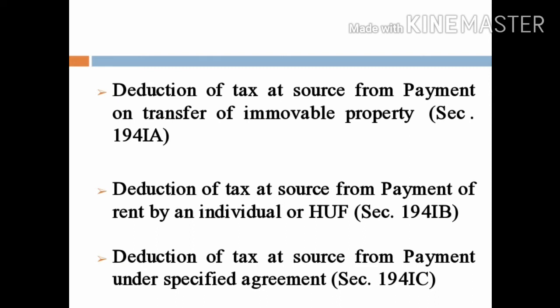In the previous lecture, we were discussing about deduction of tax under section 194H and section 194I. In this lecture we are going to discuss about deduction of tax at source from payment on transfer of immovable property under section 194IA, deduction of tax at source from payment of rent by an individual or HUF under section 194IB, and deduction of tax at source from payment under specified agreement under section 194IC of Income Tax Act 1961.